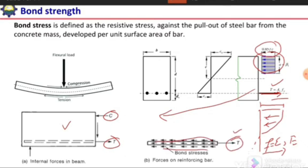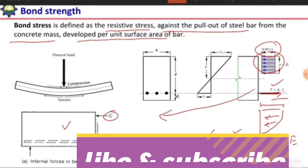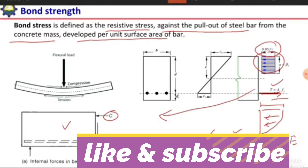Revisiting the definition: bond stress is a resistive stress against the pull-out of a steel bar from the concrete mass, measured as resistance per unit surface area of the bar. This is why it is termed bond stress.